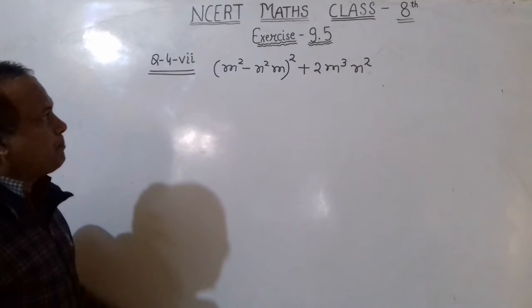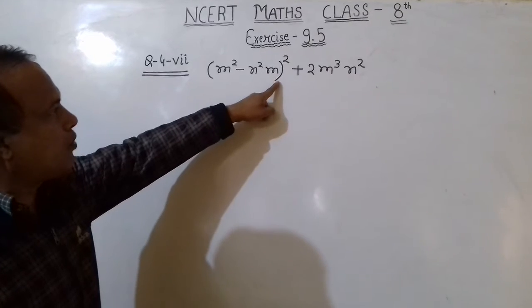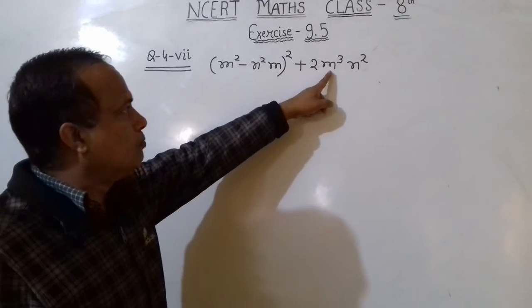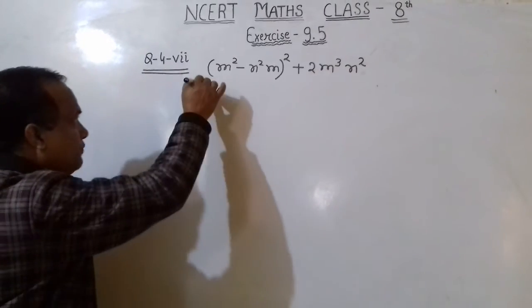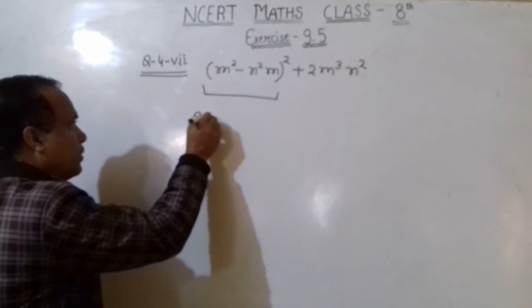Simplify (M² - N²M)² + 2M³N². Here we use the identity (A - B)².